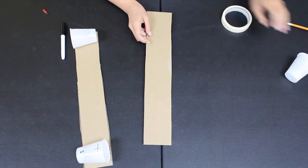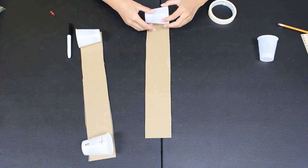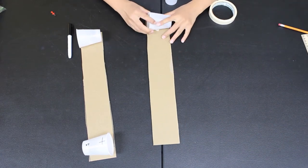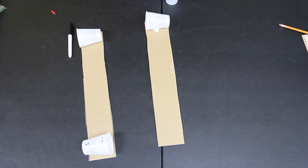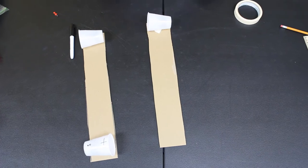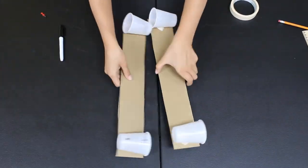Tape two more cups to the other piece of cardboard, making sure they face the same way as the two cups on your first piece. See how on the top end I have one cup facing left and one facing right? That way they're all technically facing the same direction.